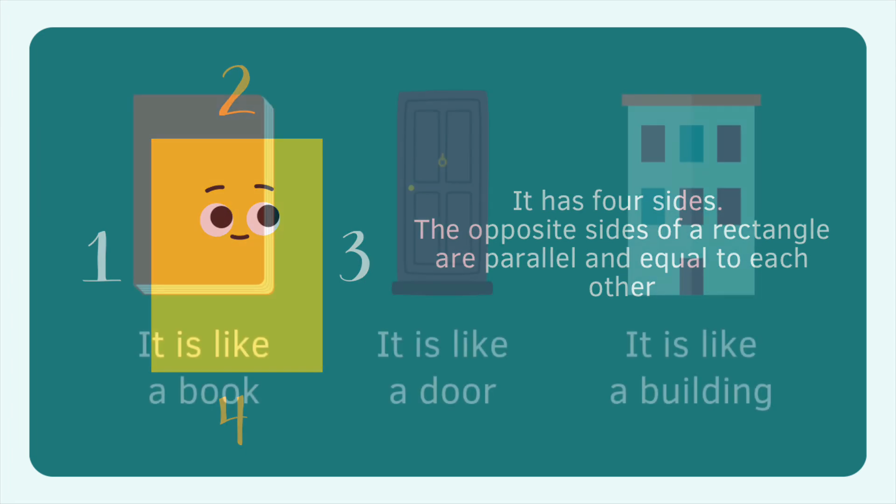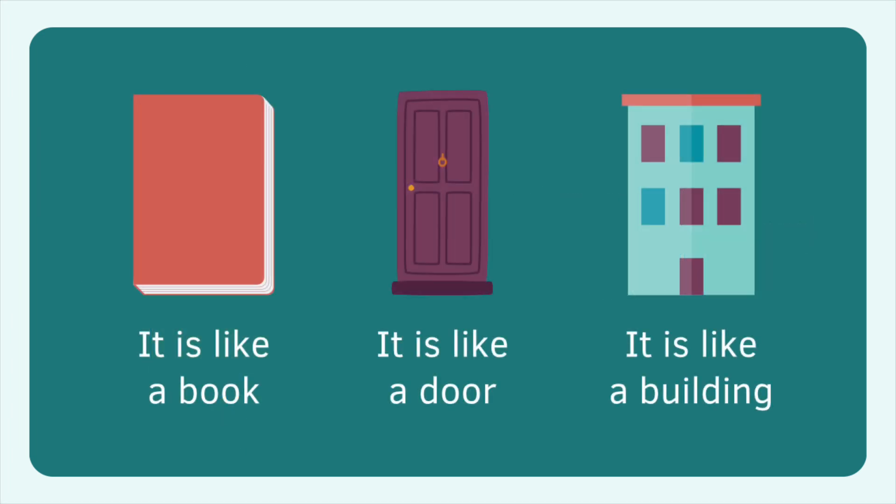This is the rectangle. It has four sides. The opposite sides of the rectangle are parallel and equal to each other. It is like a book, a door, or a building.